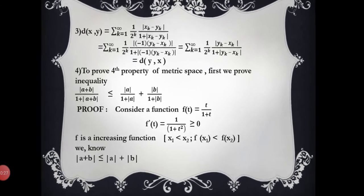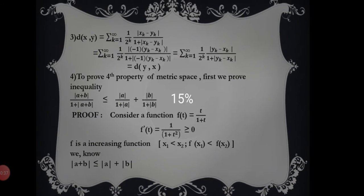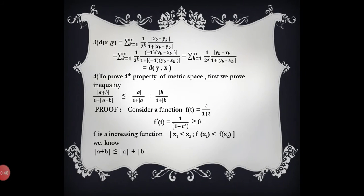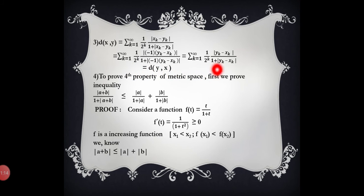The third property: d(x, y) should equal d(y, x). We consider d(x, y) = Σ(k=1 to ∞) [1/2^k · |x_k − y_k| / (1 + |x_k − y_k|)]. Taking out −1 common from both the numerator and denominator, the −1 becomes 1 since |−1| = 1, giving d(y, x). Hence d(x, y) = d(y, x) and the third property is satisfied.